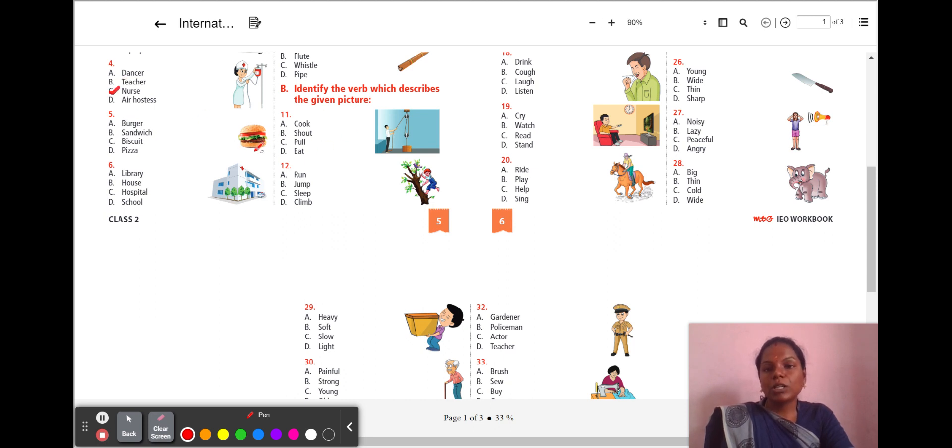Next, fourth question. Look at this woman here. What profession is she? A. Dancer B. Teacher C. Nurse D. Air hostess. On looking at her, it symbols a medical field. So, she is a nurse. C. Nurse. Next, fifth question. Look at this food. You are all familiar about this. So, what is the name of it? A. Burger B. Sandwich C. Biscuit D. Pizza. The answer is A. Burger.